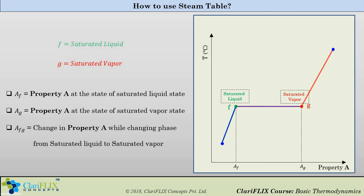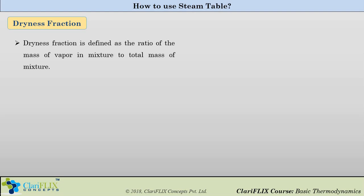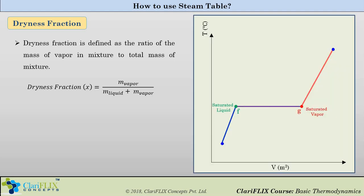Now let us understand what is dryness fraction. Dryness fraction is defined as the ratio of mass of vapor in the mixture to the total mass of the mixture. Mathematically it can be written as mass of vapor divided by mass of liquid plus mass of vapor. At the state of saturated liquid, mass of vapor will be equal to zero, so dryness fraction x will be equal to zero. At the state of saturated vapor, mass of liquid will be zero, so dryness fraction will become 1.